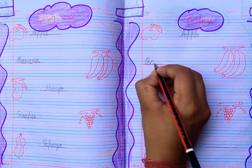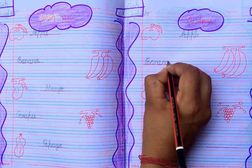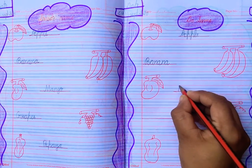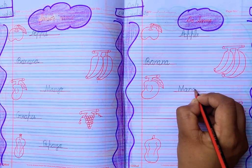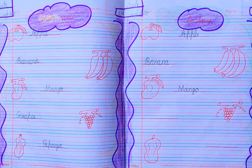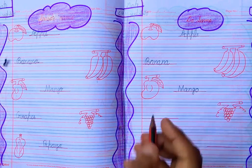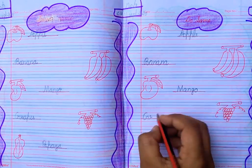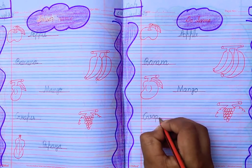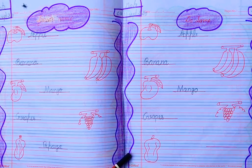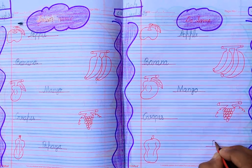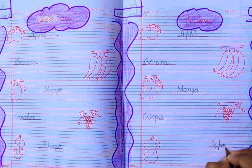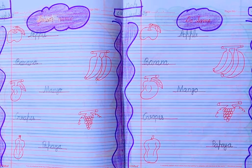This is mango, write down mango spelling: m, a, n, g, o — mango. This is grapes, write down grapes spelling: g, r, a, p, e, s — grapes. This is papaya, write down papaya spelling: p, a, p, a, y, a — papaya.